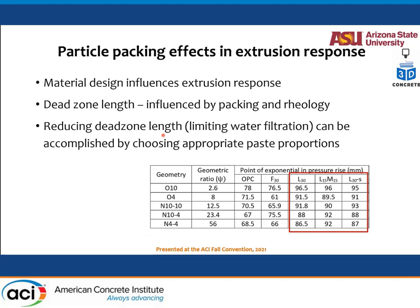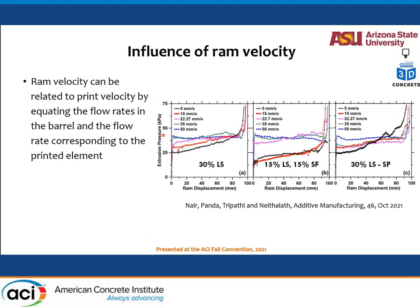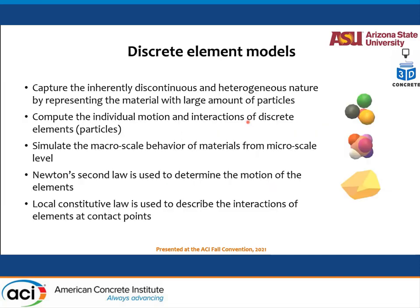Ram velocity can be related to print velocity by equating the flow rates of the barrel and the printed element. Doing multiple velocities — from 5 mm/s to 50 mm/s print velocity — you can still see the dependence of extrusion pressure on displacement for mixes with or without superplasticizer and different ingredients. These are simplistic tests usable as quality control, and we have also used them as validation for our simulations.